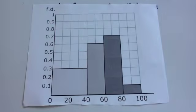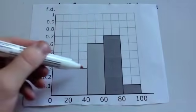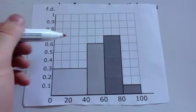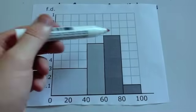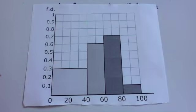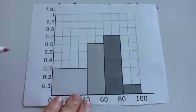And each of the bars has got a frequency density. So the first bar, the frequency density is 0.3, the next one is 0.6, the next one is 0.7, and the final one is 0.1. Okay, so to find the frequency, remember you do frequency density times class width.